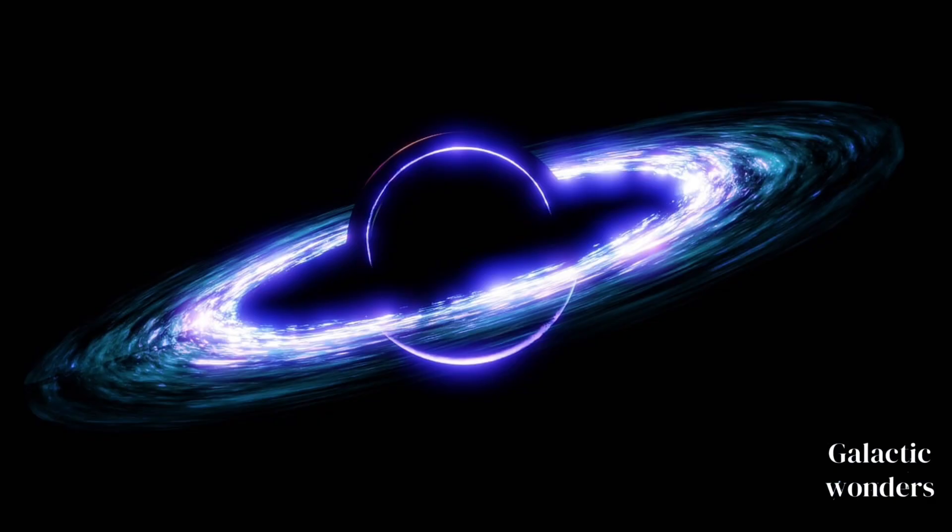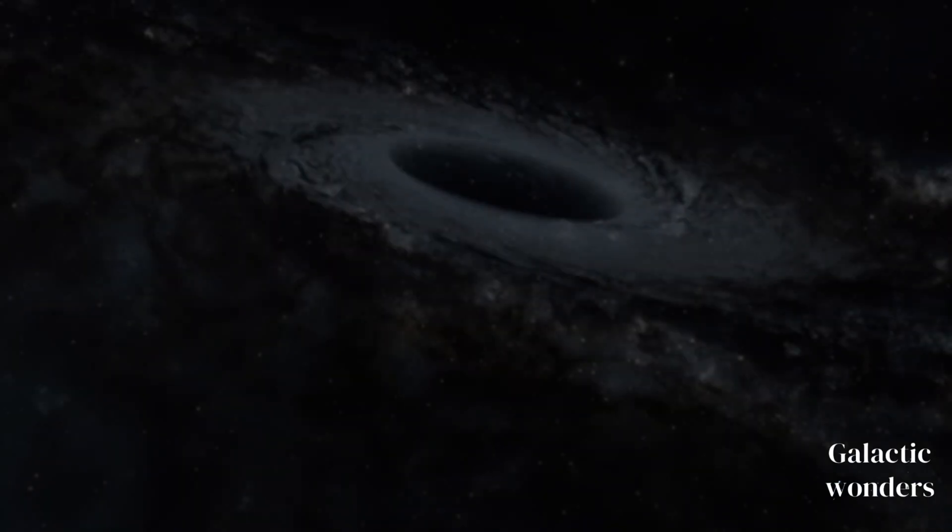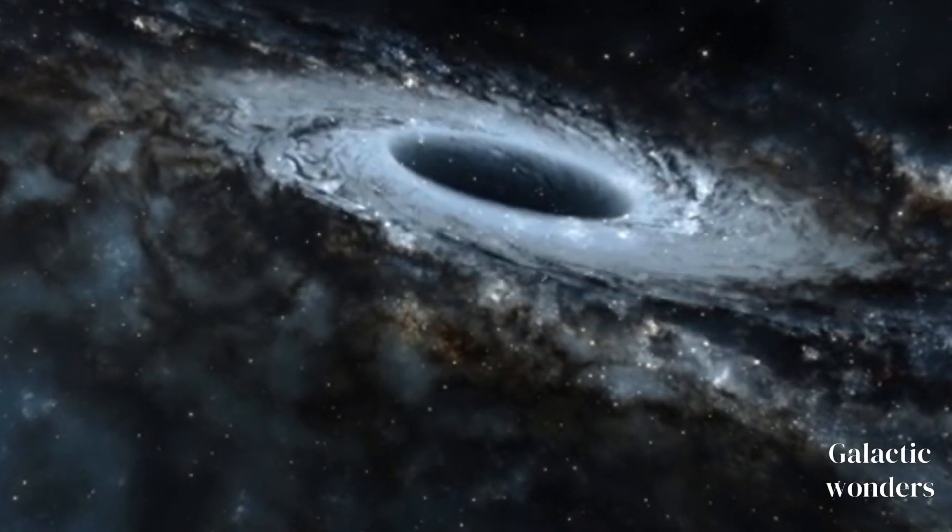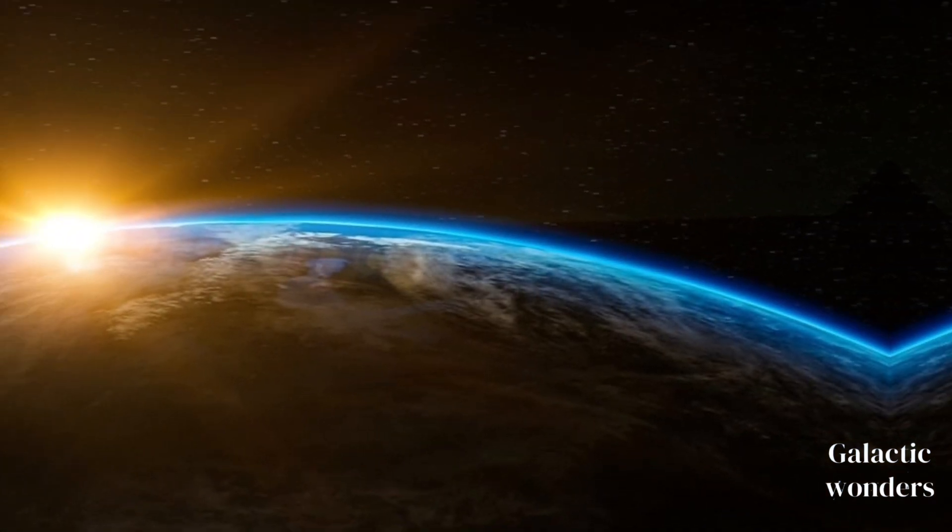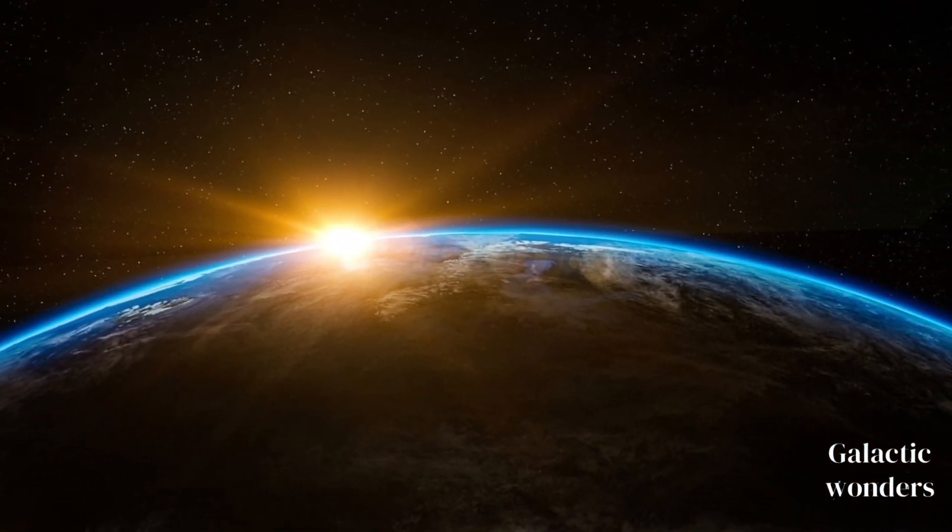Black holes come in different sizes and have varying masses. Stellar black holes form from the collapse of massive stars, ranging from a few times the mass of our Sun to several tens of times larger.